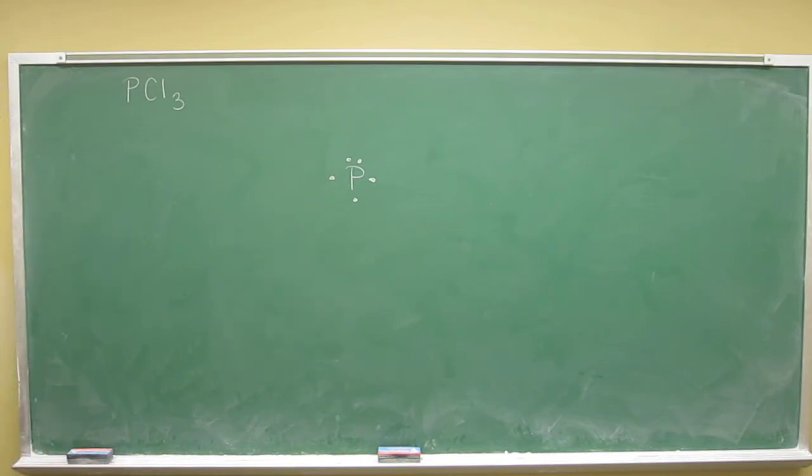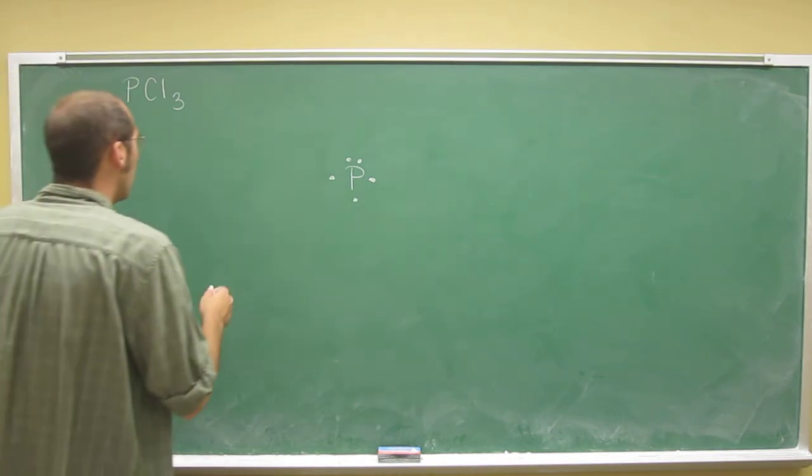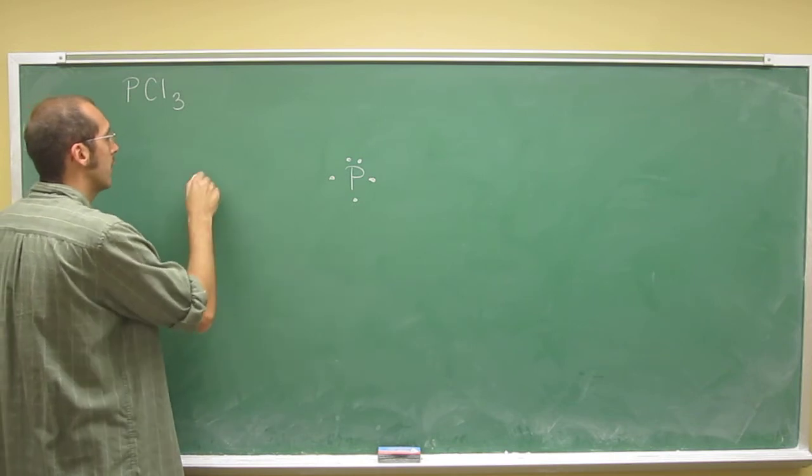And you can start adding more than just the three atoms that we're depicting here. And we'll build some of these molecules, what we call expanded valence molecules like PCl5, for example, later. But for right now, let's do these simple molecules.